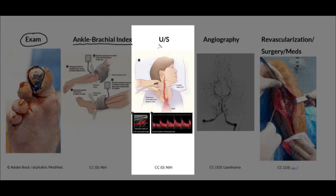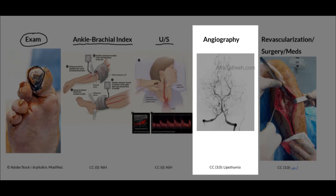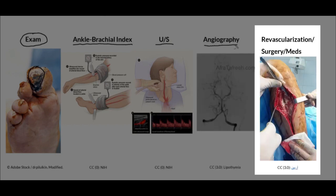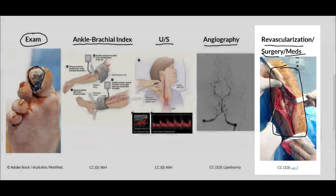We frequently use ultrasound in the context of vascular disease, as this can allow us to take a closer look at the potential for carotid stenosis as well as in the screening of patients for the potential development of aneurysms. We will also see that angiography can be utilized, and of course we also have our interventions including revascularization, surgery, as well as various medications. In this particular clinical image, this happens to be a fasciotomy in the case of a patient who developed compartment syndrome.